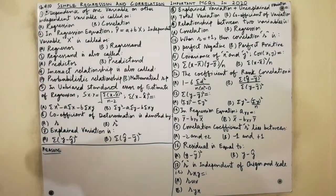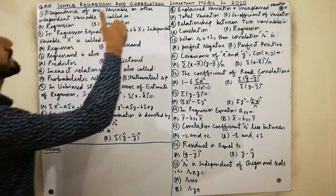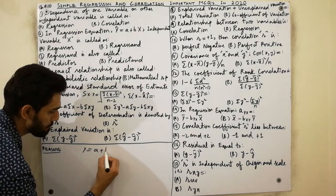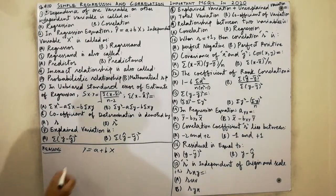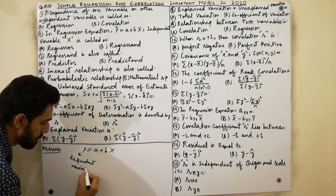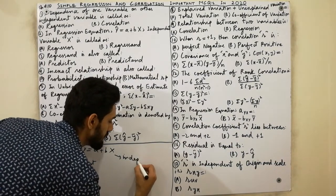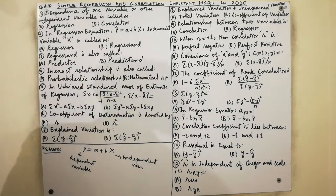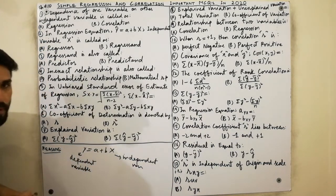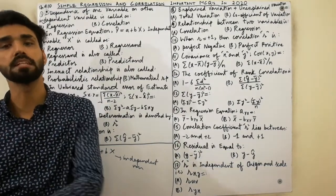The first MCQ: dependence of one variable on other independent variables is called regression. In the regression equation Ŷ = A + BX, Y is called the dependent variable and X is called the independent variable. So the definition of regression is: dependence of one variable on another independent variable is called regression.